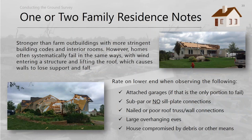Family homes are generally stronger than farm outbuildings with more stringent building codes. However, homes tend to fail similarly — the wind gets underneath, lifts the roof, and the walls collapse. Rate them lower on the EF scale when only the garage failed, or the garage failed and took the roof with it, when there are subpar or no sill plate connections, poor nail construction, large overhanging eaves, or when the structure was compromised by other debris.